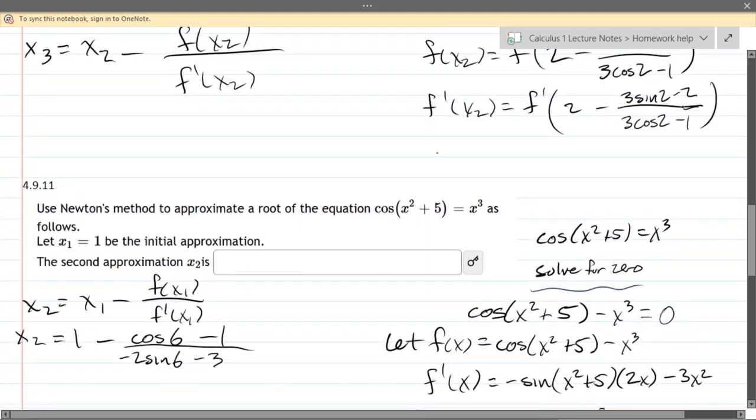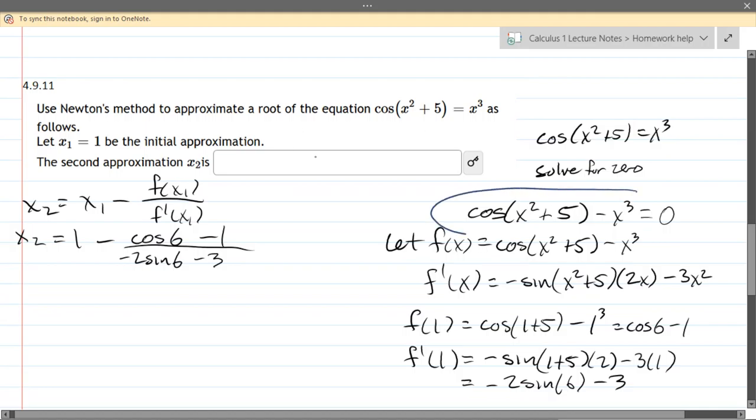And we're going to end up with this right here, cosine x squared plus 5 minus x cubed equals 0. This, again, is our function f of x right there, so let f of x equal that.